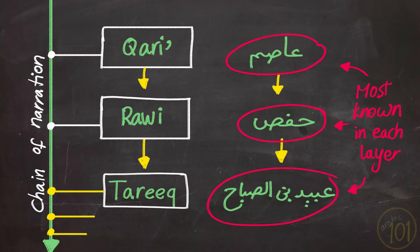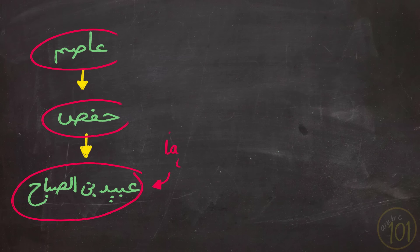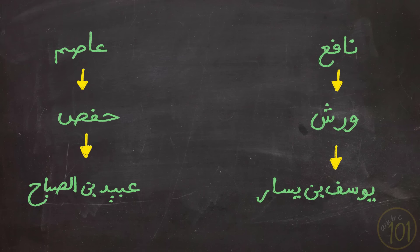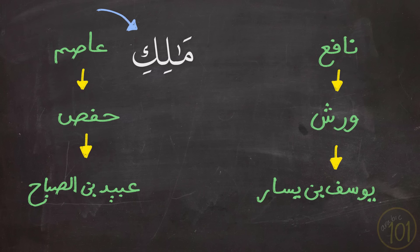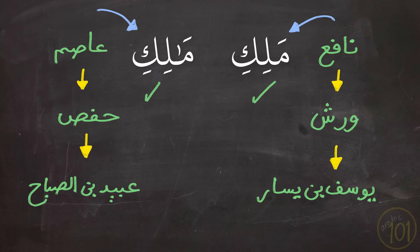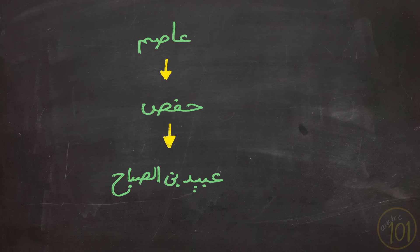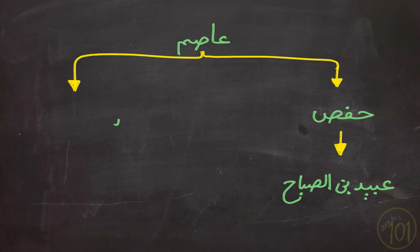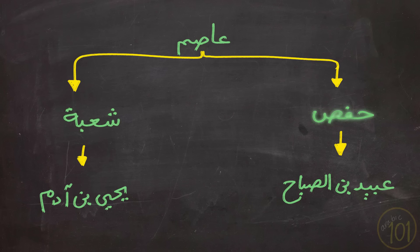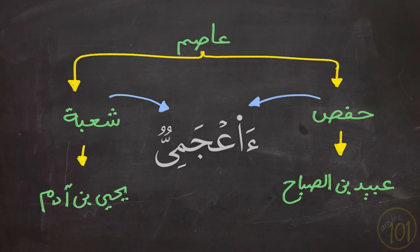He became famous for it and it was named after him. For example, a qira'a difference between Asim and Nafi' is Malik versus Malik in Al-Fatihah — both options are correct. Asim chose Malik and Nafi' chose Malik, and this is what they taught to their students. And then within the qira'a of Asim, we can have a riwaya difference like that between Shu'bah and Hafs, for example in how they pronounce a certain word.